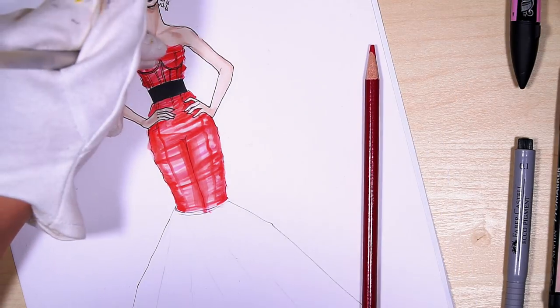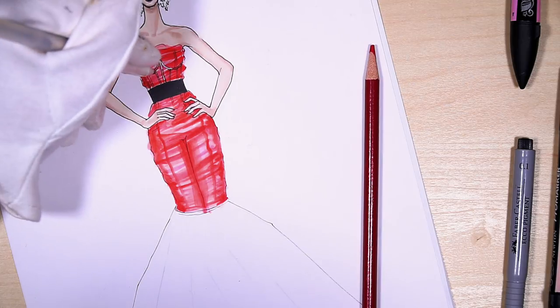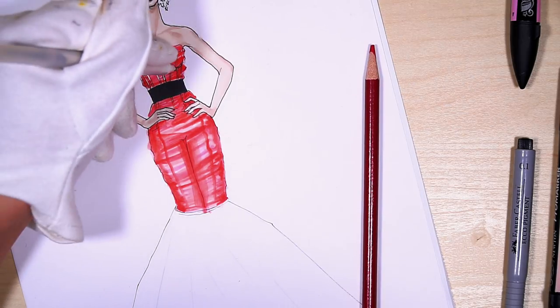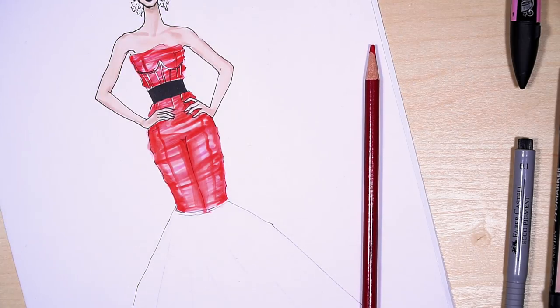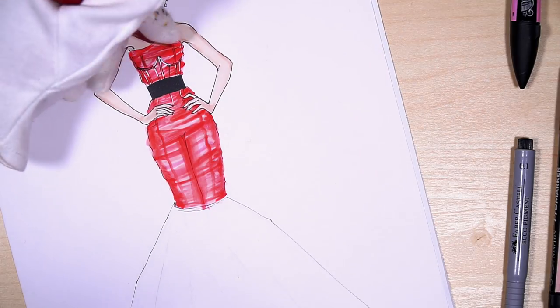And next with white gel pen, add some reflection on her metallic details of the corset, not totally, but partially.